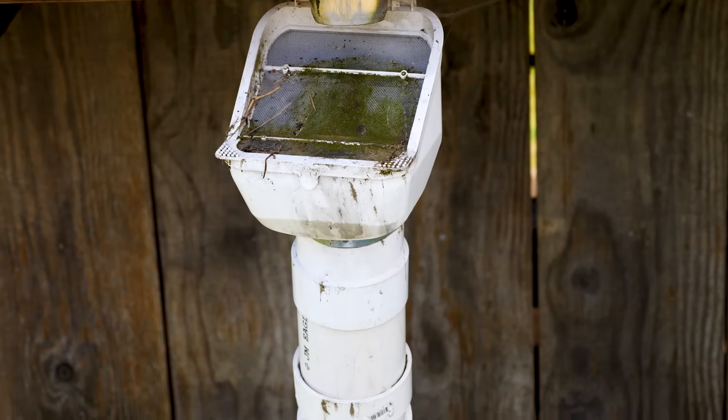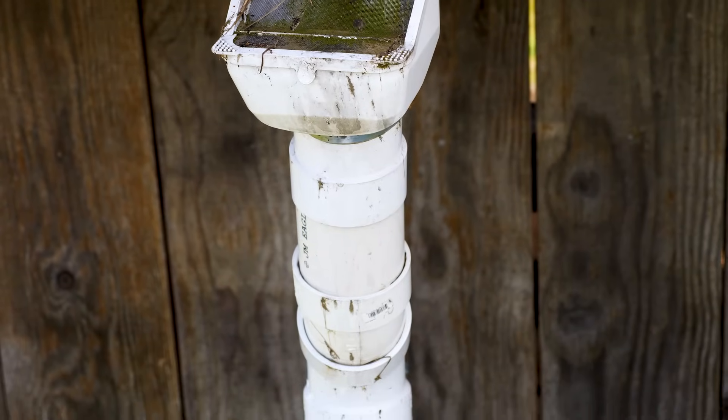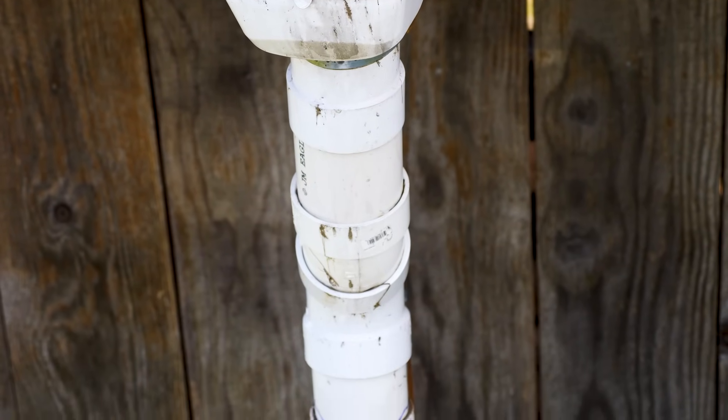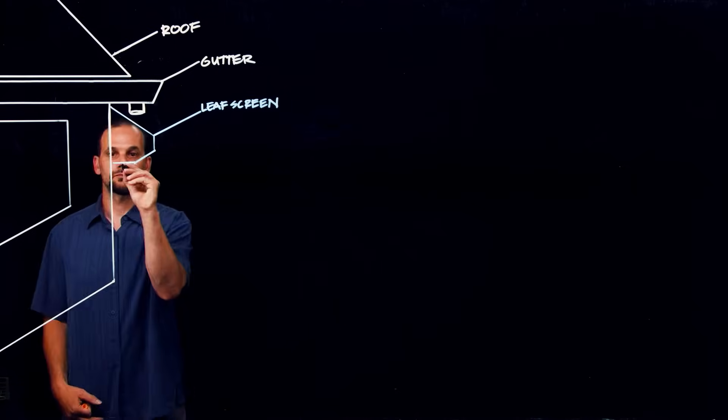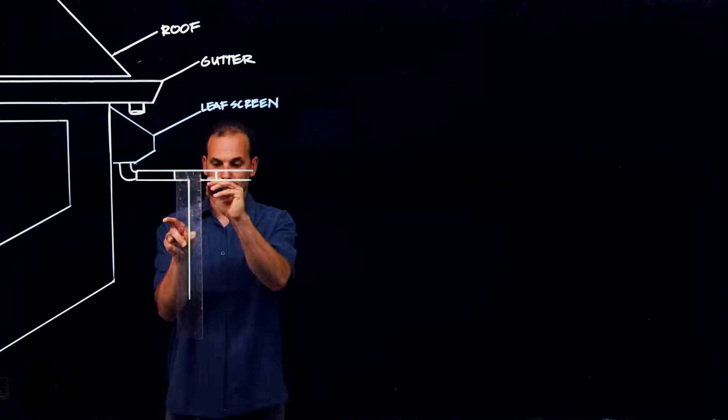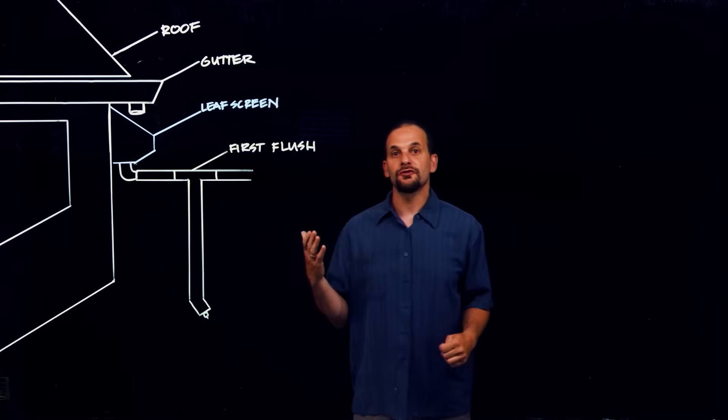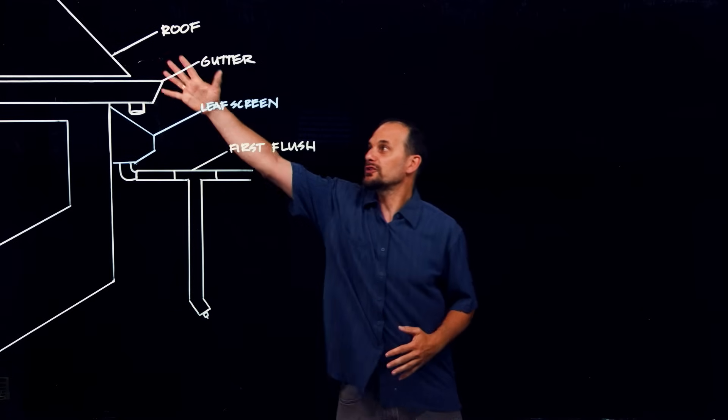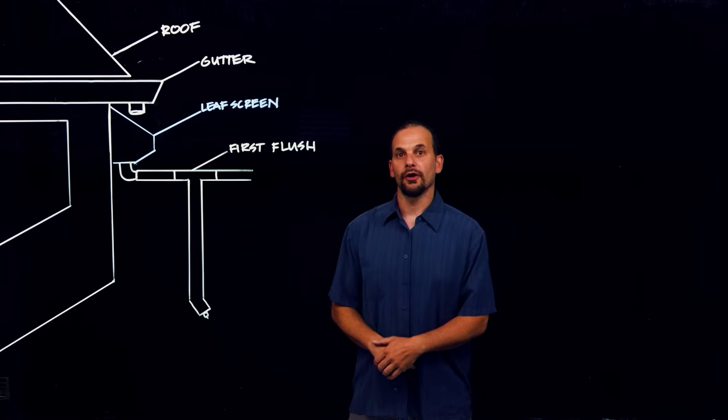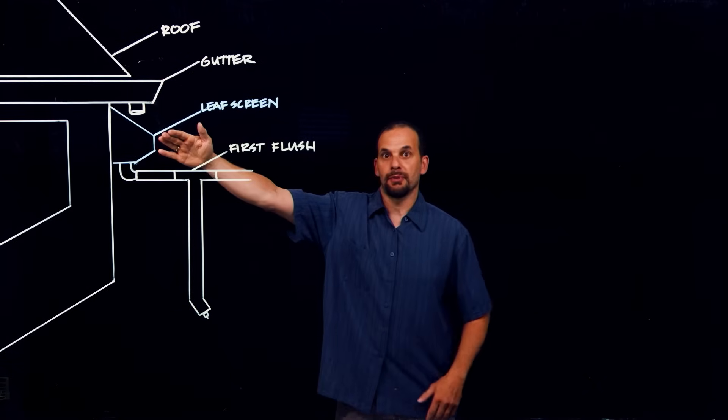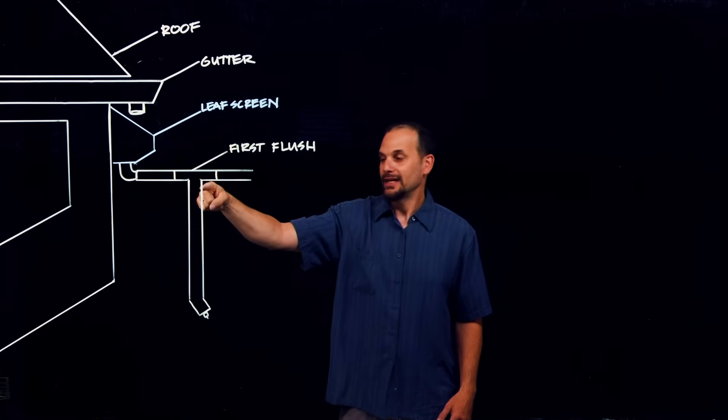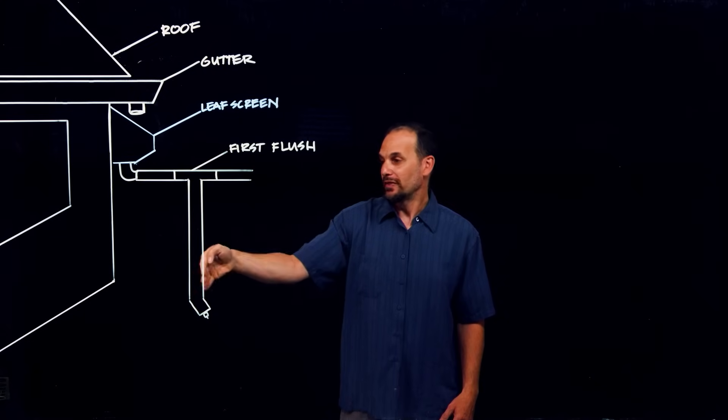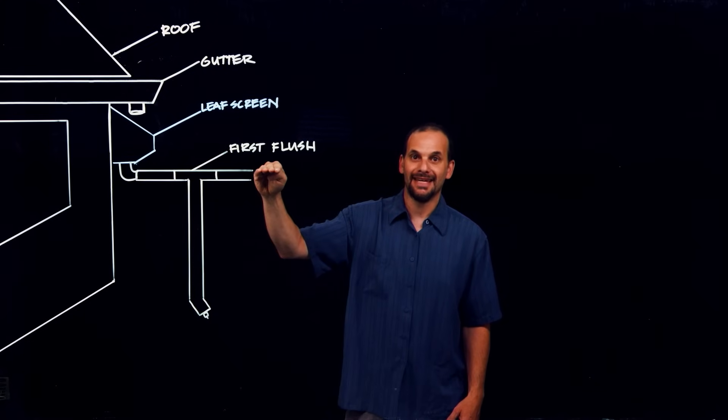But still, there's going to be contaminants in the water that will get through the leaf screen, fine dust and particles that have built up on the roof between rains. So, there's this thing called a first flush diverter. Now, a first flush diverter takes the first flush of dirty water that flows through the downspout and the leaf screen and it drops it down into this pipe without heading on to the tank.